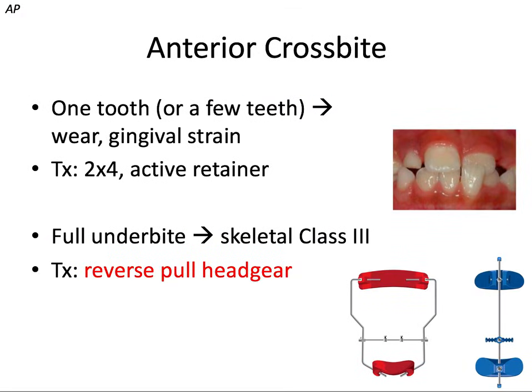In the AP dimension, we can have anterior crossbite, which can involve just a few teeth or the entire anterior dentition. If it's one or a few teeth, this can result in uneven wear and/or strain on the gingival attachment. This can be treated with limited braces, often called a two-by-four — two molar brackets in the back and four incisor brackets in the front, just for the arch being treated. In this case we would treat just the upper arch and work on tipping that upper incisor out in front of the lower incisor.